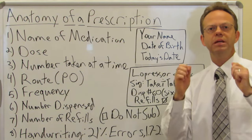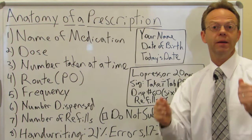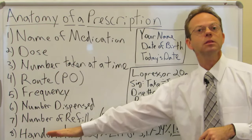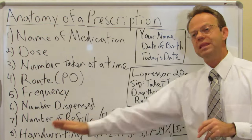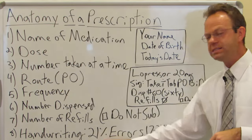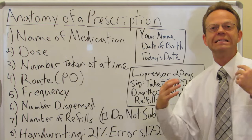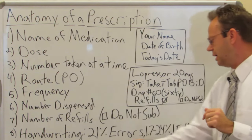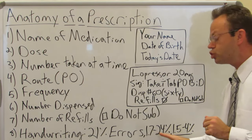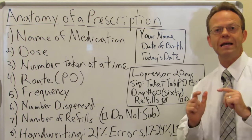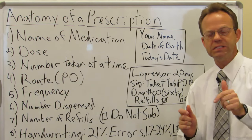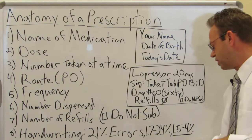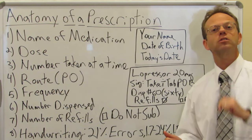Why am I telling you all this? Because there could be a mistake. Look at all the opportunity for error. In fact, they found that of handwritten prescriptions, 21% of them — one in five — contain an error. And even if the physician writes it correctly, there is a 1.7 to 24% rate of a dispensing error at the pharmacy. It is estimated that between handwriting errors and dispensing errors, 1.5 to 4% of those errors are serious.